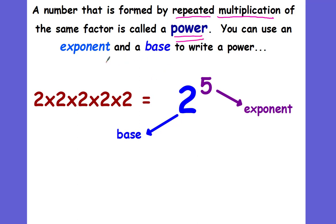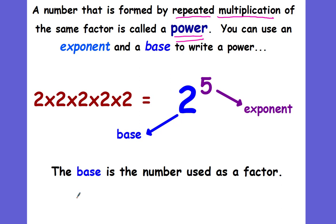We can use an exponent and a base to write a power. So our repeated multiplication was 2 times 2 times 2 times 2 times 2. The number that we're repeating — the 2 — is called our base. The base is the number that is used as a factor. Factors are numbers that you multiply together. What are we multiplying together here? 2's. So 2 is our base.